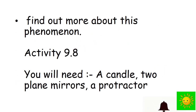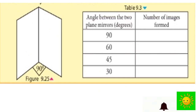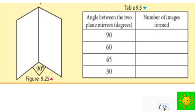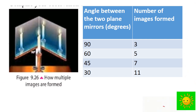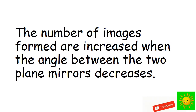Let's find out more about this phenomenon. We have to do this activity using a candle, two plane mirrors, and a protractor. Keep two plane mirrors at an angle of 90 degrees and place the lighted candle between them. Count the number of images formed. Change the angle between the plane mirrors to 60 degrees, 45 degrees, and 30 degrees and count the number of images formed each time. Then tabulate your observations. The results are: at 90 degrees there are 3 images; at 60 degrees there are 5 images; at 45 degrees there are 7 images; at 30 degrees there are 11 images. The number of images formed increases as the angle between the two plane mirrors decreases.